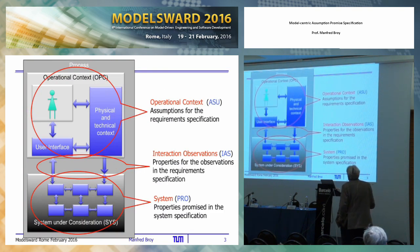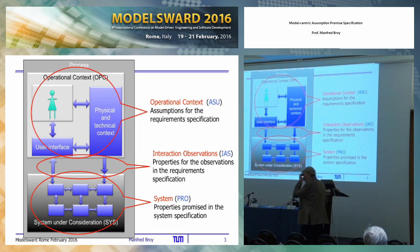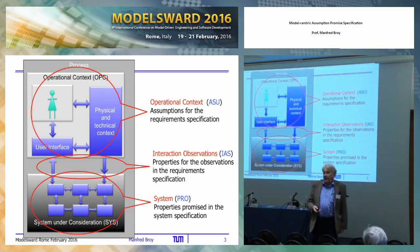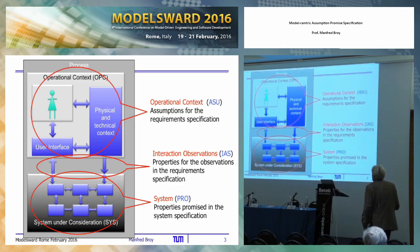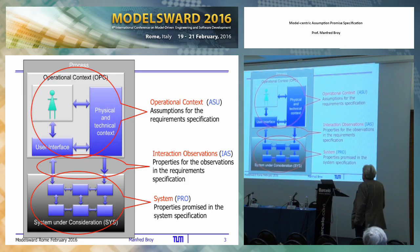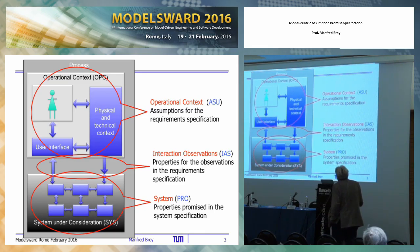Having those systems, and now having a closer look, we have the system under consideration. The first thing which I think is important is that you have to think about what the boundaries of the system you are dealing with are, because you define in the process of developing a system which are the boundaries of the system under development. Having defined the boundaries, you have already implicitly decided about the interface. And the interface defines what is the relationship between what is going on outside the system, what is influenced by the system for the outside, and how the outside influences the system.